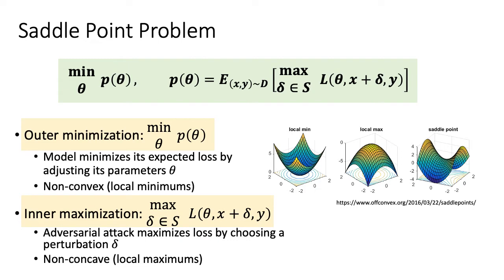This is the saddle point problem that the authors identified as this paper's central object of study. This problem consists of an outer minimization and an inner maximization. The outer minimization is the model minimizing its expected loss by adjusting its parameters theta. The inner maximization is the adversarial attack maximizing the model's loss by choosing a perturbation delta to apply to input x. On the right we have a visualization of a saddle point — a saddle point is the result of a minimization along one axis and a maximization along an orthogonal axis, and the derivatives are zero along both of these axes.